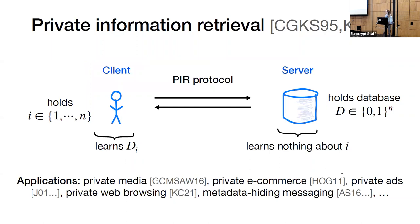Let me explain the private information retrieval problem. In this problem, we have a server that holds an n-bit database, and we have a client that holds an index i between 1 and n. What our client is going to want to do is to privately read the i-th database bit. It can do this if it interacts with the server following a PIR protocol. At the conclusion of this protocol, our client is going to learn the i-th database bit d_i, while our server is going to learn nothing about the index i.